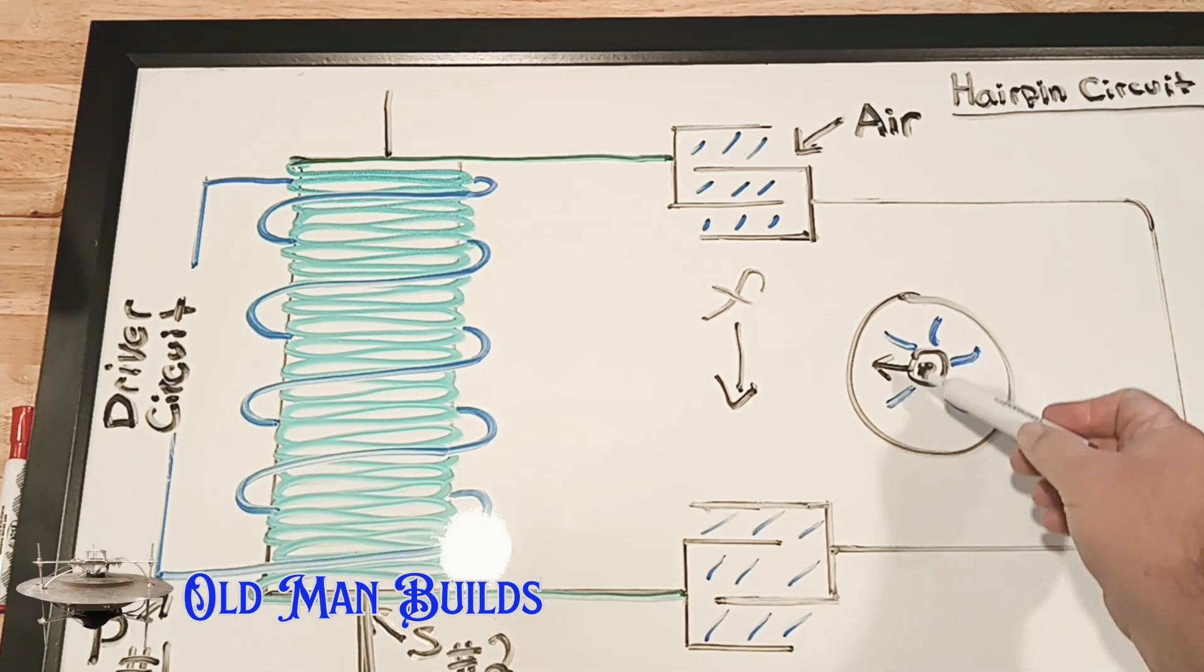You see, it's just a variable capacitor. Change the rod size, change the capacitance. Change the distance between this right here and this point right here, change the capacitance. It's all a very simple understanding of how this circuit actually works.